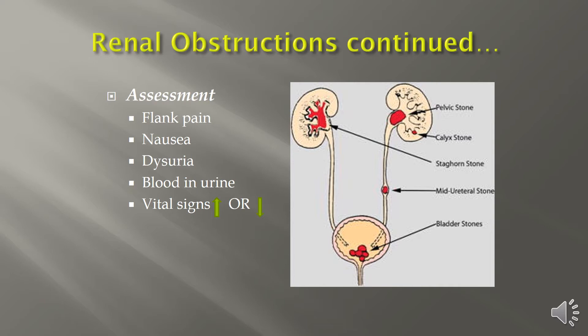On assessment for renal stones, patients typically will present with flank pain or costovertebral angle pain. They'll be nauseated because of the pain. They may have dysuria, which is difficulty urinating. If there's any sort of tear caused by the stone, there may be blood visually seen in the urine or noted in a urinalysis.